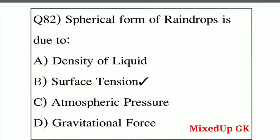Question number two: spherical form of raindrops is due to — Option A: density of liquid, Option B: surface tension, Option C: atmospheric pressure, Option D: gravitational force. The answer is surface tension. Surface tension is why raindrops take a spherical form.